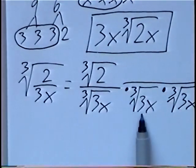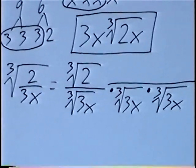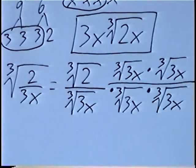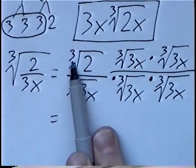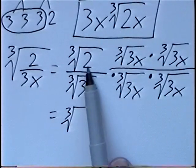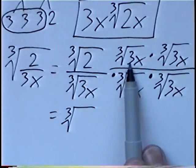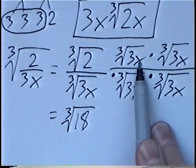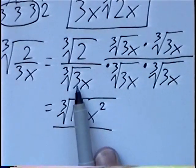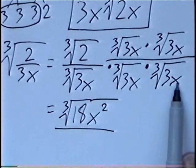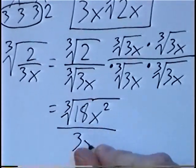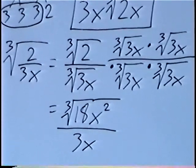Keep in mind, like fractions, whenever we multiply for the denominator, we also have to multiply on the numerator. So we'll multiply the top by the cube root of 3x times the cube root of 3x. Since these are all cube roots, the root stays the same and we multiply the inside numbers: 2 times 3 times 3. Two times 3 is 6, times 3 more is 18. Also, x times x is x squared. For the denominator, we have 3 times 3 times 3, and x times x times x — that's 3 sets of 3 and 3 sets of x. Since we're looking for the cube root, we can take all three and put them outside the radical, leaving nothing inside.